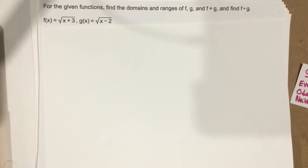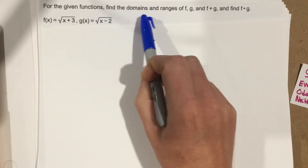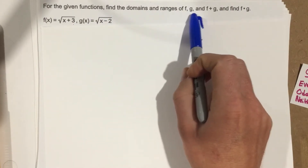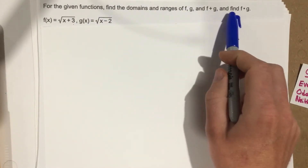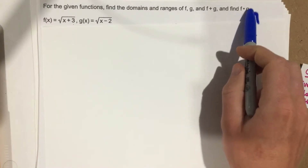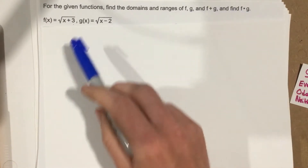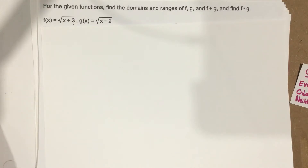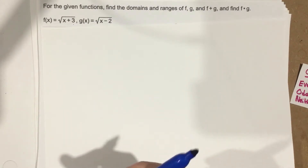This is problem number 1 from section 1.2. This problem says, for the given functions, find the domains and ranges of f, g, and f plus g, and find f times g. They give us two radical functions, so I'm going to find these simultaneously.